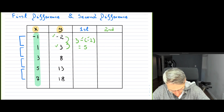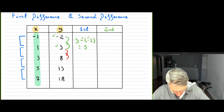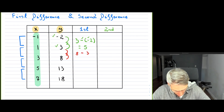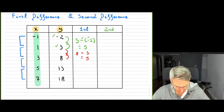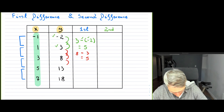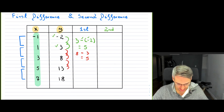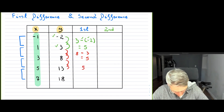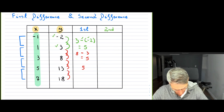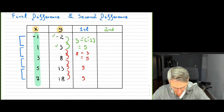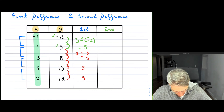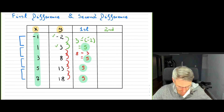Now you do that for all the values in your table. Taking the second pair: eight minus three equals five again. Then 13 minus eight equals five, and 18 minus 13 equals five. Notice that all of them are equal to five.